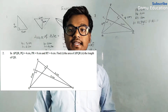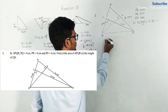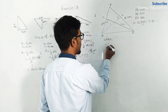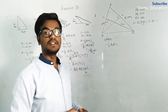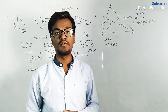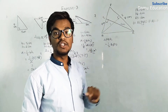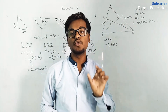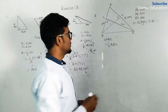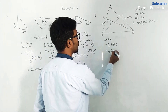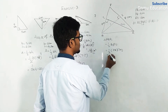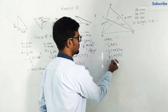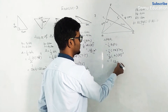First, find the area of triangle PQR. Area of triangle PQR equals half into base into height. Base PQ is 4 centimeters and the corresponding perpendicular height TR is 6 centimeters. So area equals half into 4 into 6, which gives 12 centimeters square.